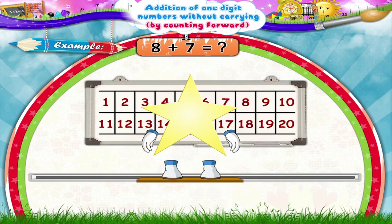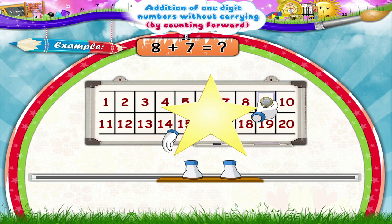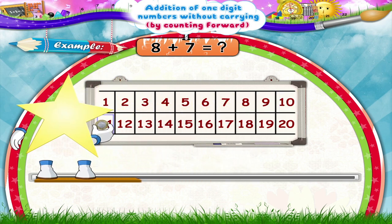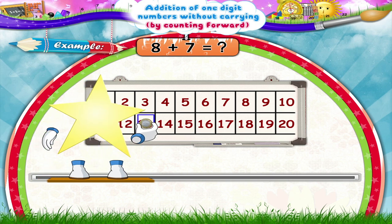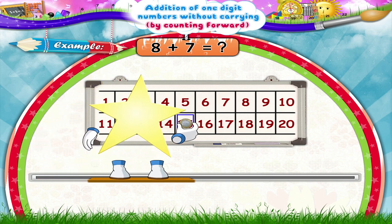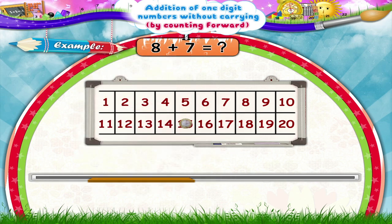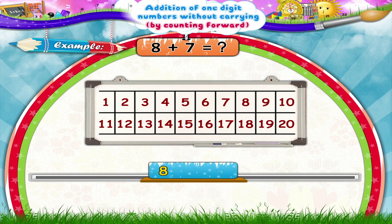Let's add 8 plus 7. Place a coin on the number 8 in the square. Now count forward 7 squares. Yes, 1, 2, 3, 4, 5, 6, 7. We reach the number 15. So 8 plus 7 equals 15.